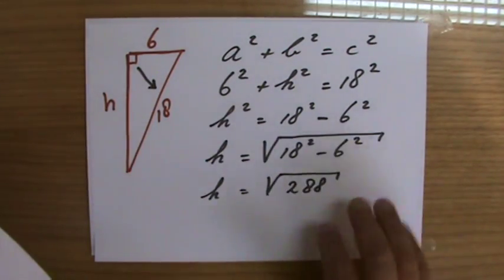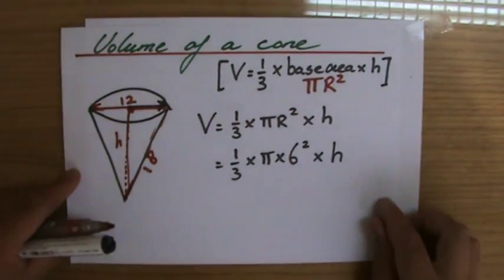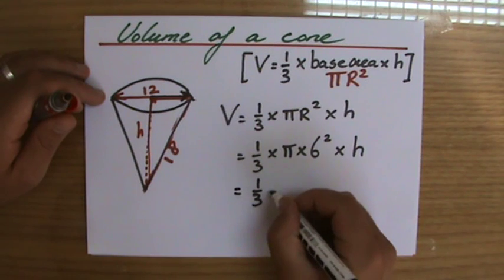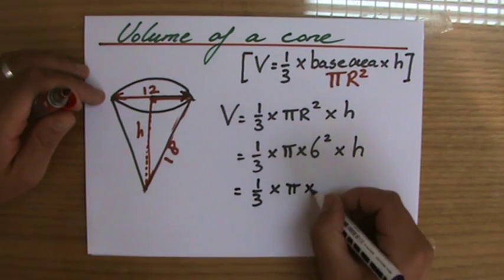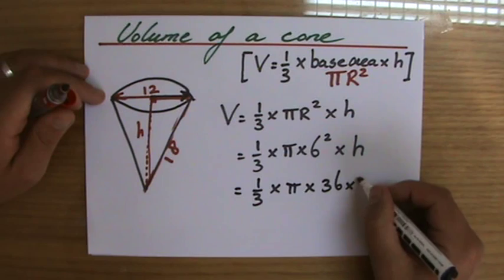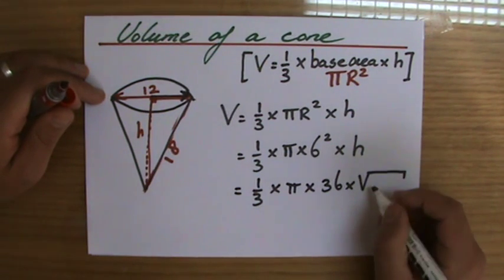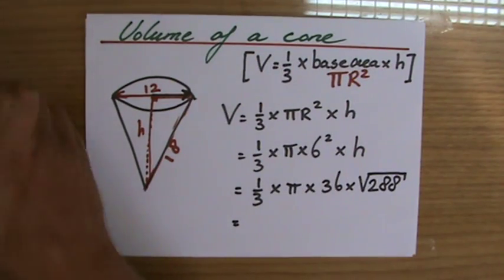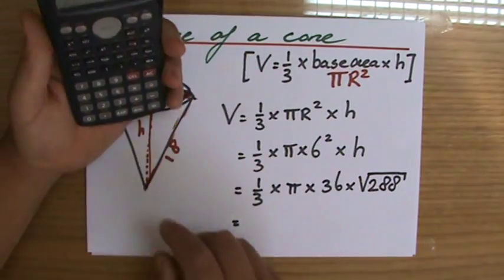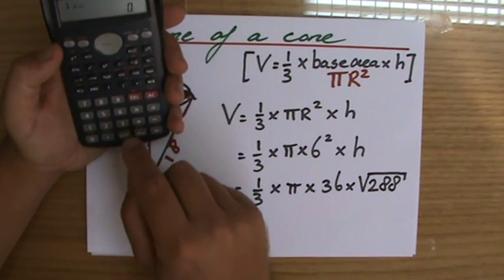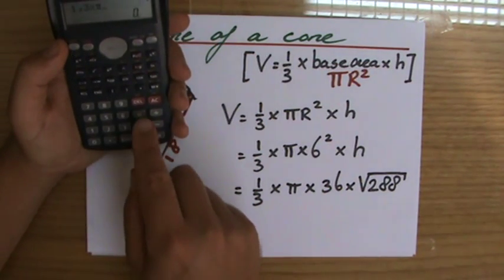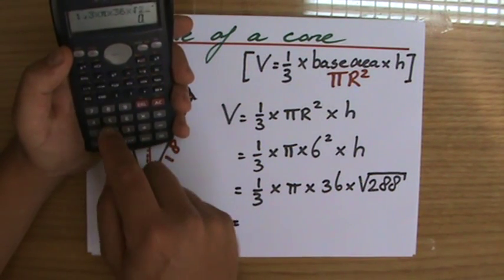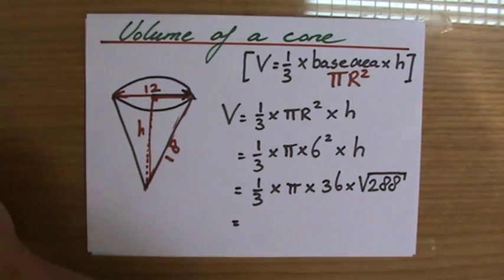Why do I leave it like that? Because I'm not finished yet. I find the height: one-third times π times 36 times the height, which we said was the square root of 288. Now I can put it all in my calculator - all in one go: one-third times π times 6² times the square root of 288.